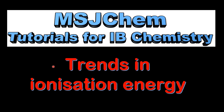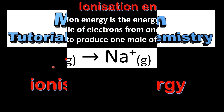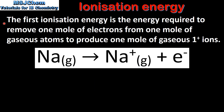This is MSJChem. In this video I'll be looking at trends in ionization energy. Let's start by looking at a definition of first ionization energy. The first ionization energy is the energy required to remove one mole of electrons from one mole of gaseous atoms to produce one mole of gaseous one positive ions.